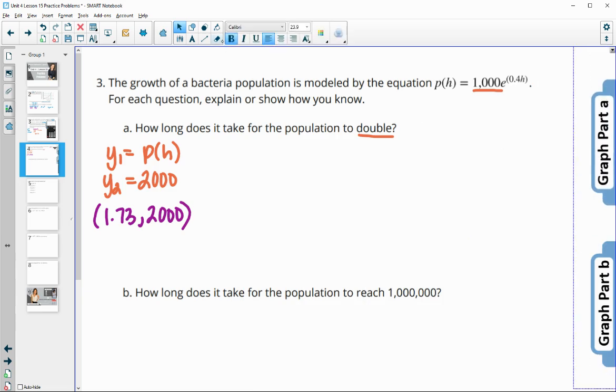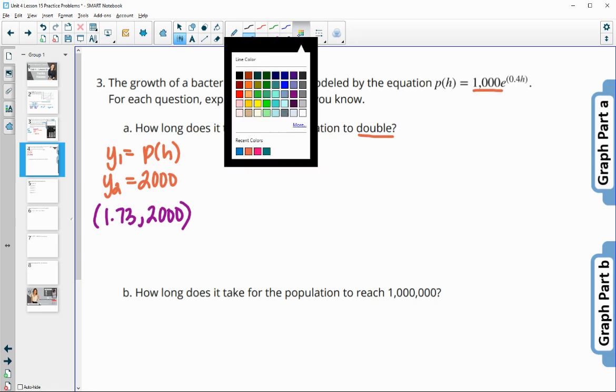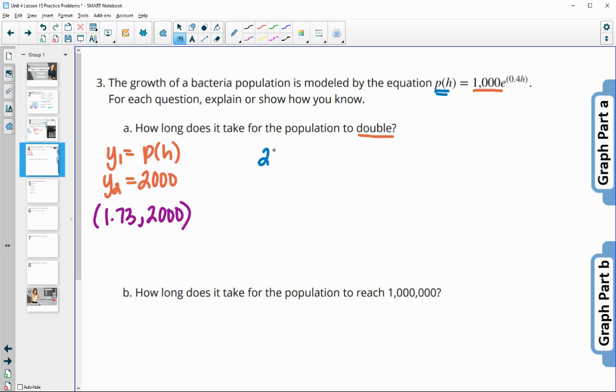Another way you could do it is actually solving it. So plugging that 2,000 in for P of H. So saying 2,000 is equal to 1,000 times E to the 0.4H. So then we would divide by 1,000 to find out that this needed to be 2, this growth factor. So 2 needs to equal E to the 0.4H. And then this is in exponential form. So we could write it in logarithmic knowing that E is the base here.